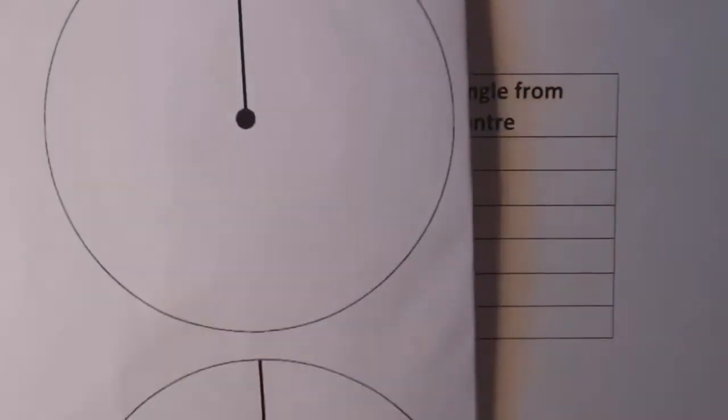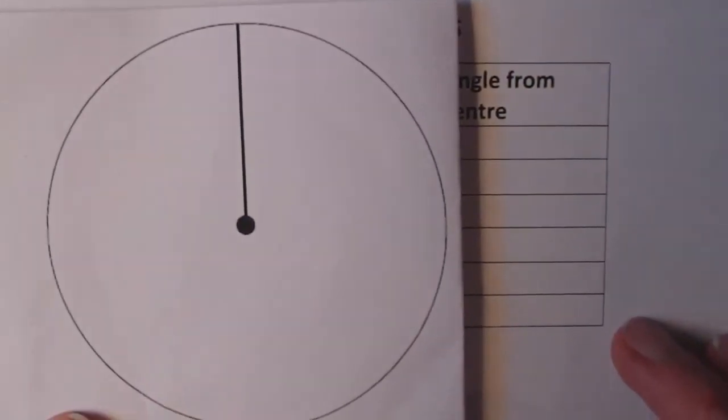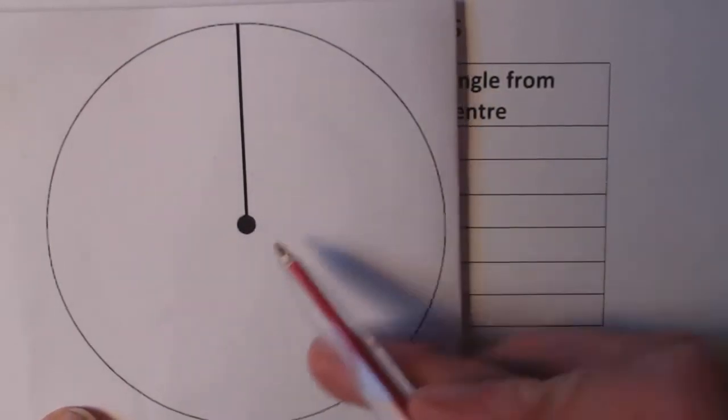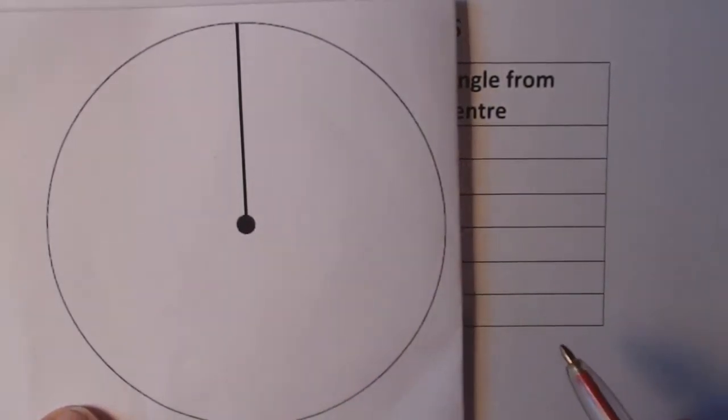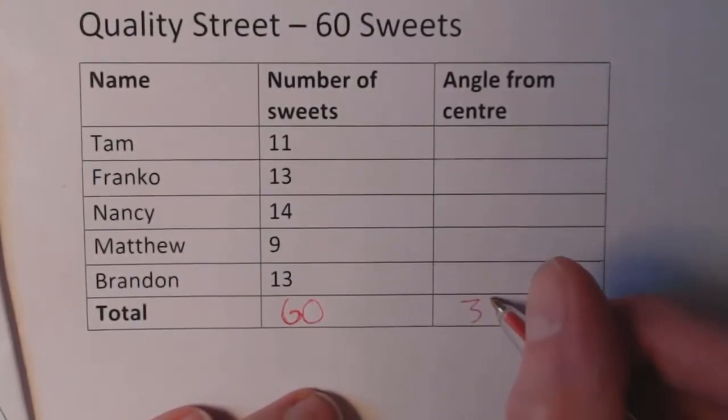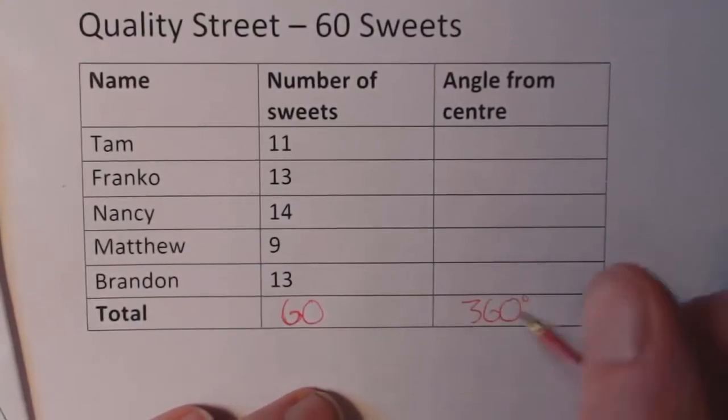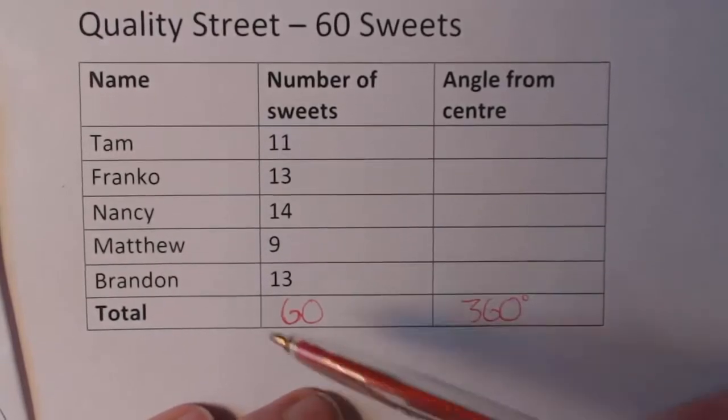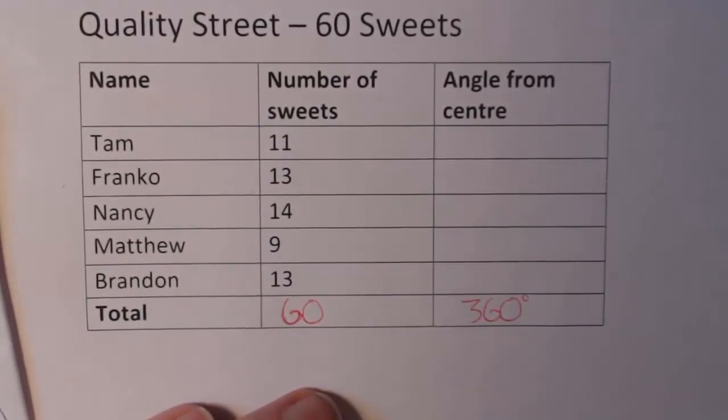Now angle from center. With a pie chart, obviously you start off with a blank pie chart but you want to make sure you split it up into different segments and they all have to add up to the magic number of 360. So it's all about trying to work out how much Tam gets of the pie chart, how much Franko, Nancy, Matthew, and Brandon.